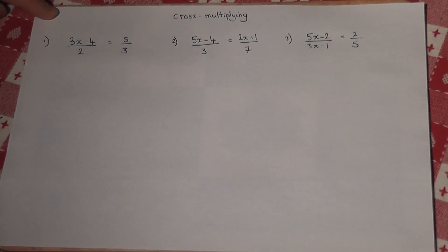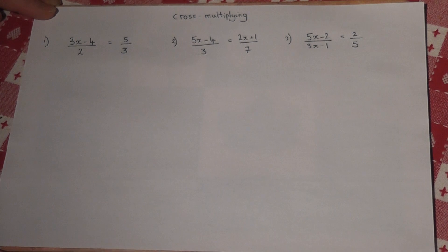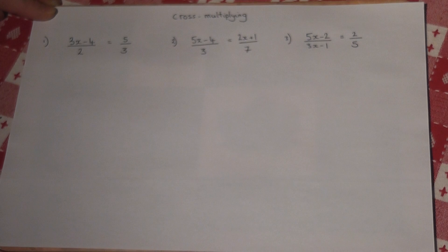Cross-multiplying is a technique for solving equations where there are two fractions on either side of the equal sign. It's quite a simple technique.